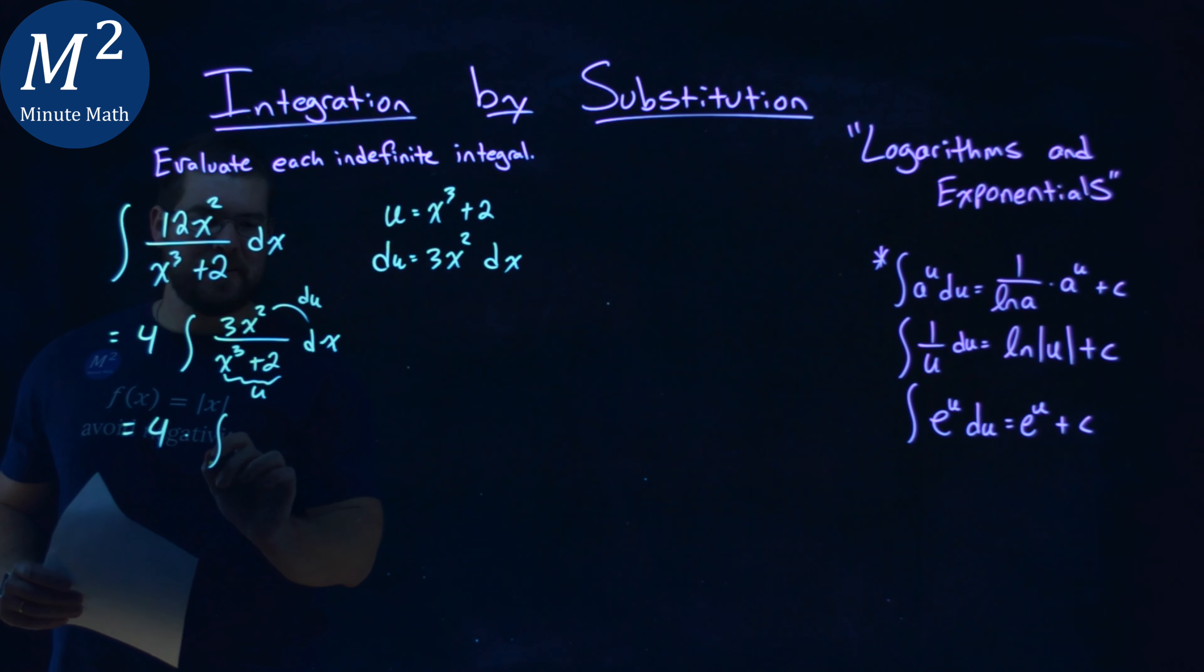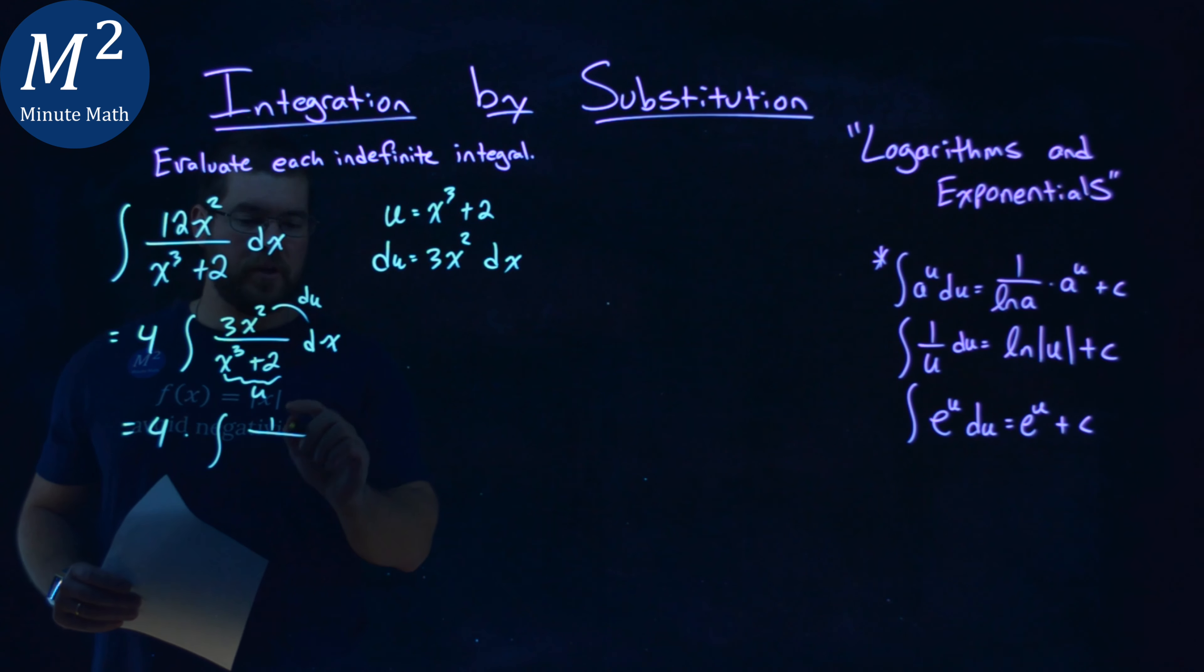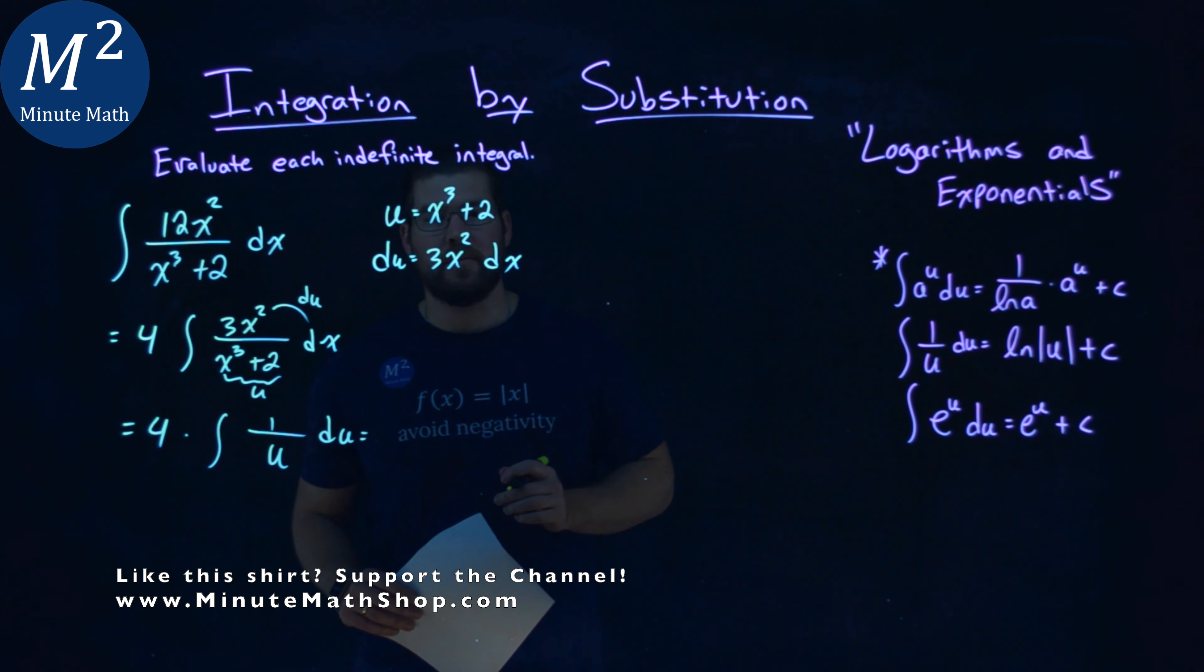So 4 times the integral here, instead of x cubed plus 2 we'll put a u in the denominator, and then instead of 3x squared dx, that's just my du. This is a much easier problem to solve.